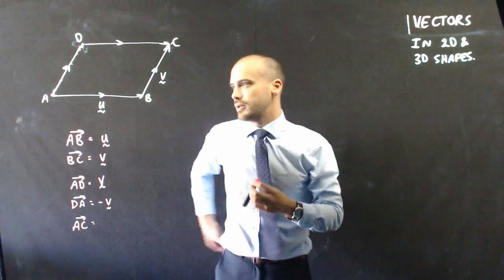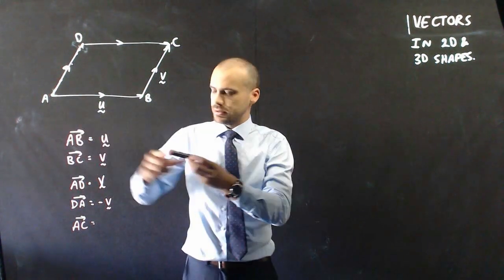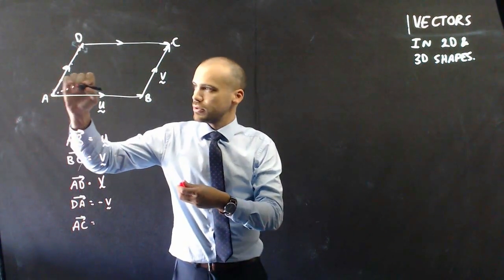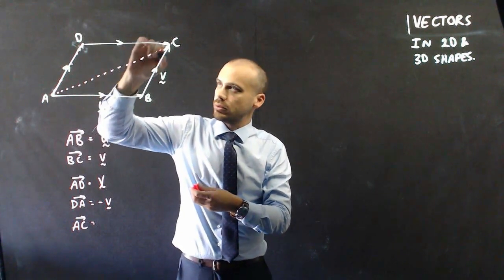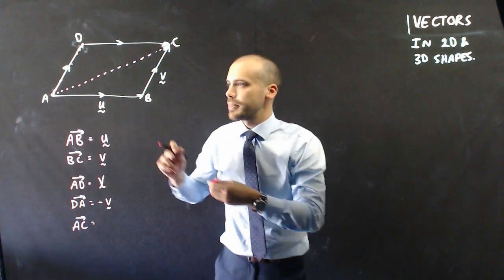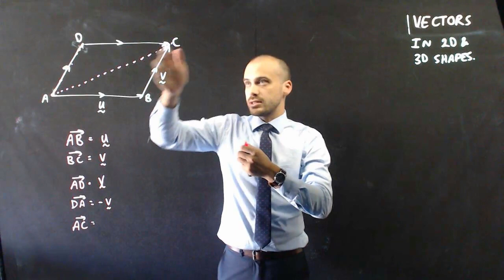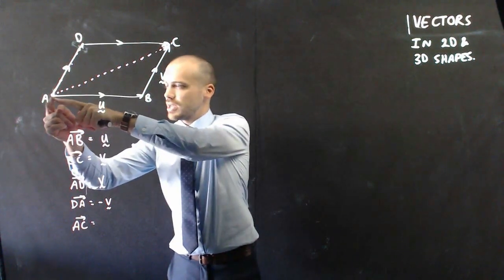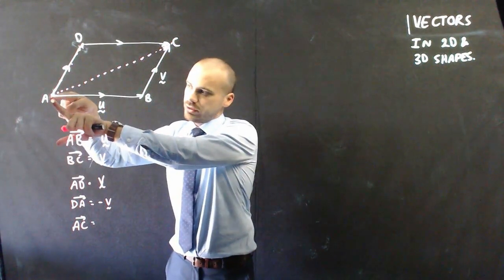So let's look at AC, it starts from here and it goes all the way through there. Well, A to C starts at the tail of U.